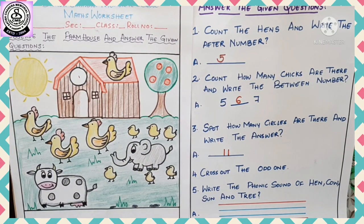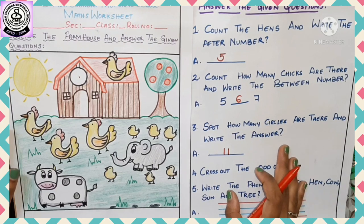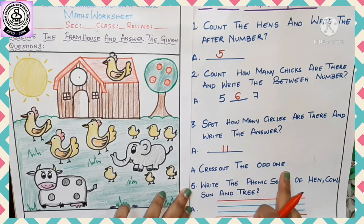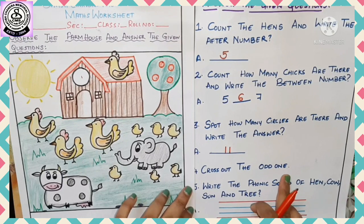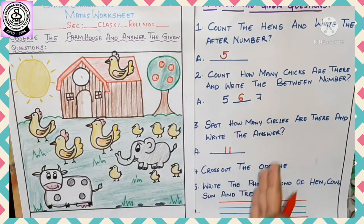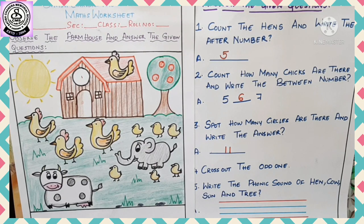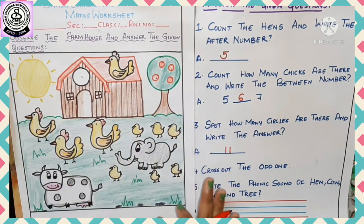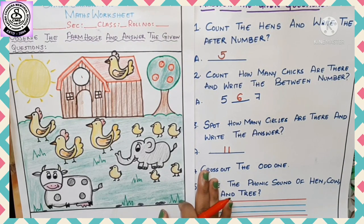Let's move to our fourth question: cross out the odd one. We need to cross out what is different here. Can you find anything odd? Observe it carefully. These are all animals, but let me ask you — in a farmhouse, which animal lives: a domestic animal or a wild animal? Yes, domestic animals. So is there anything odd in this picture?